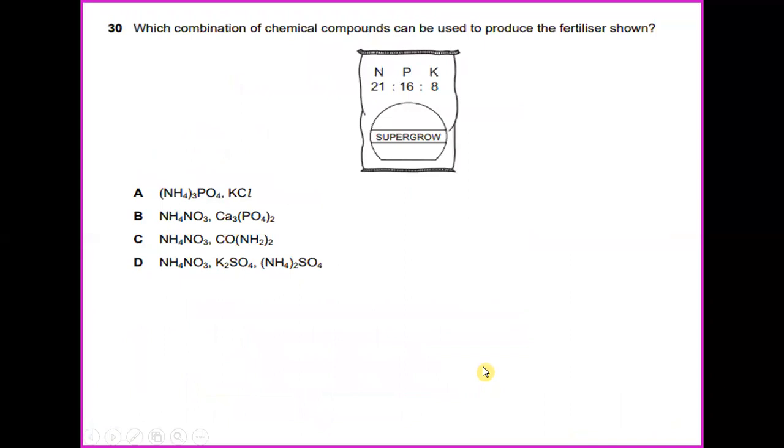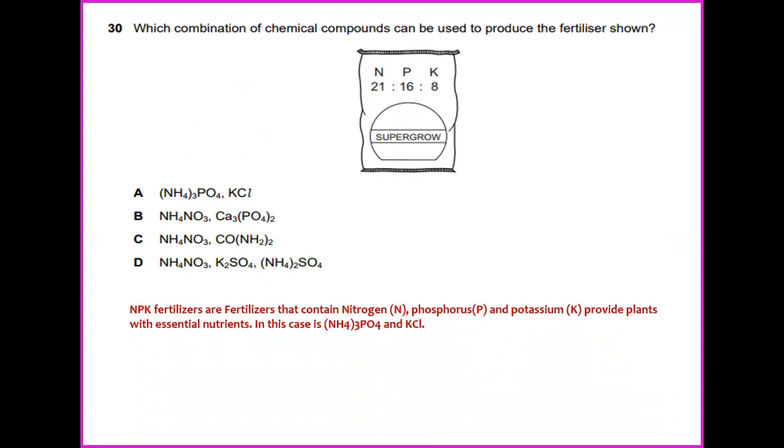Which combination of chemical compounds can be used to produce the fertilizer shown? N represents 21, P represents 16, NK represents N8. NPK fertilizers are fertilizers that contain nitrogen, phosphorus, and potassium, which provide plants with essential nutrients. So in this case, the most suitable is NH4 3PO4 and KCl.